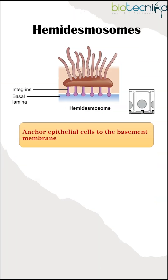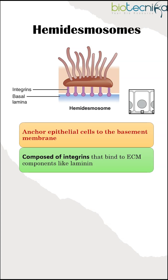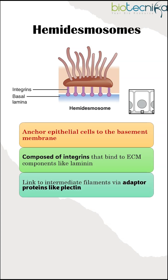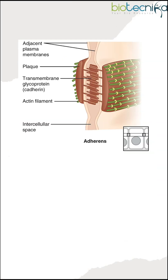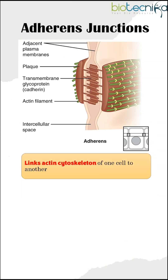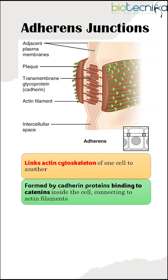Hemidesmosomes anchor epithelial cells to the basement membrane. They are comprised of integrins that bind to ECM components like laminin, and link to intermediate filaments via adapter proteins like plectin.